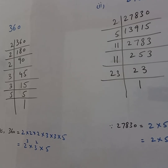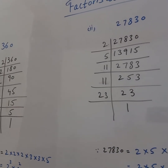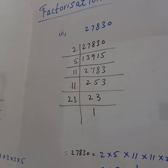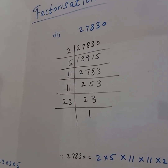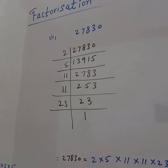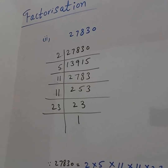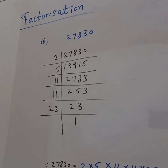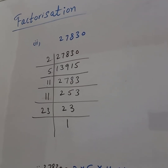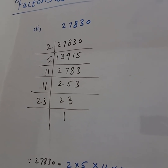Now we will factorize 27830. We divide: two ones are two, two threes are six, two nines are eighteen, two ones are two, two fives are ten. Next, five twos are ten.